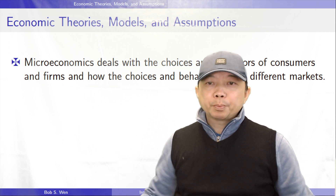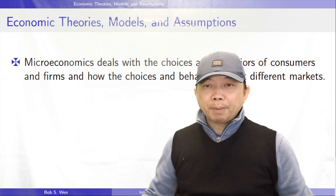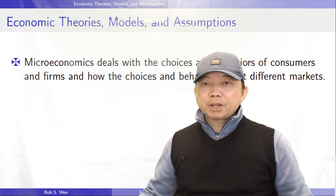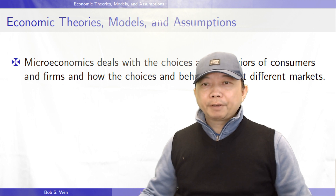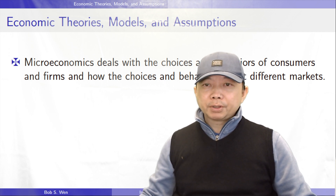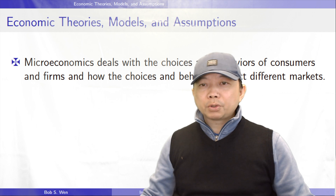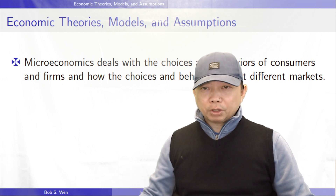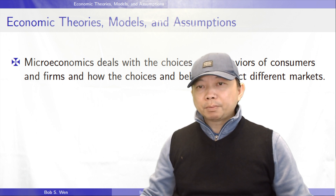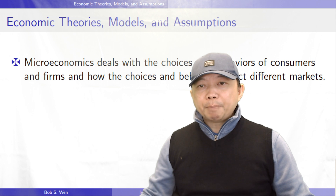Rational individuals respond to price changes by altering the number of products they buy or produce. Studying economics helps us better understand the price changes we observe every day and figure out what determines market prices. Microeconomics cares about consumers and producers, and also investigates efficiency and equality. It not only examines the goods markets but also analyzes the labor market.